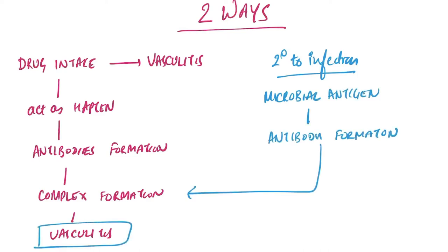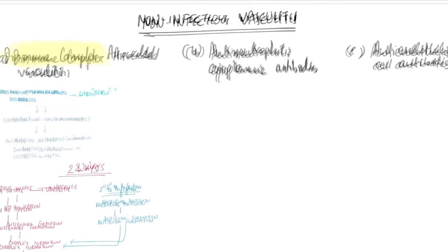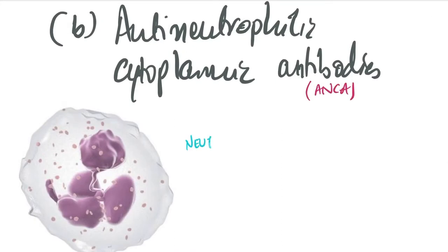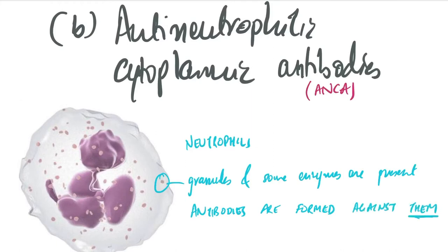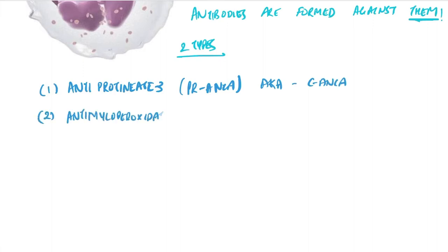Now talking about anti-neutrophilic cytoplasmic antibodies (ANCA), these are antibodies formed against neutrophils which contain granules and enzymes. There are two types: anti-proteinase 3 antibodies, known as PR3-ANCA or classically C-ANCA, and anti-myeloperoxidase, known as P-ANCA.